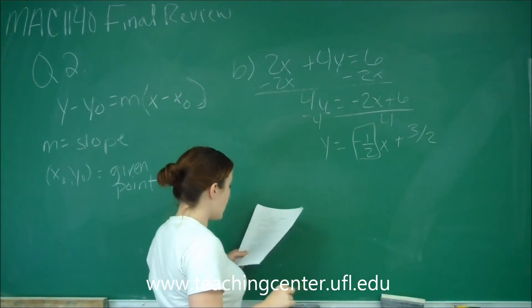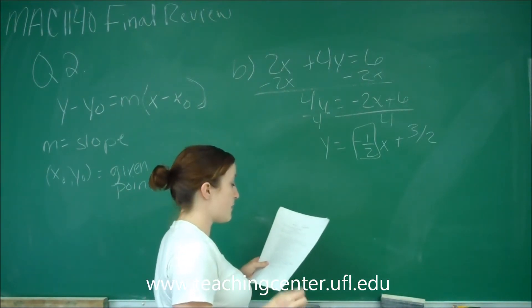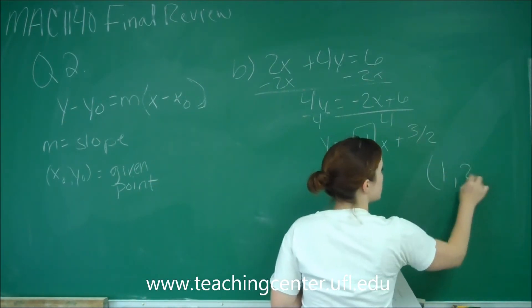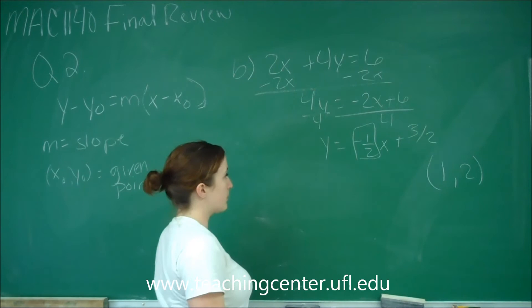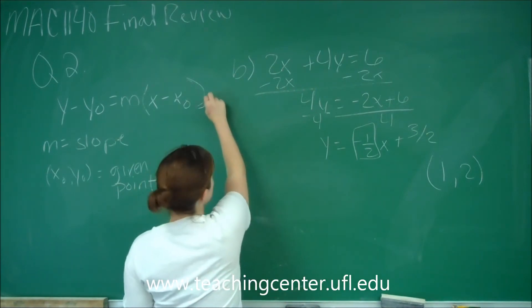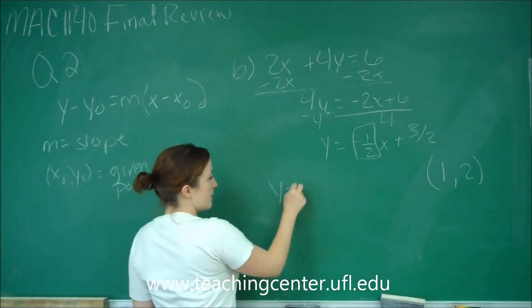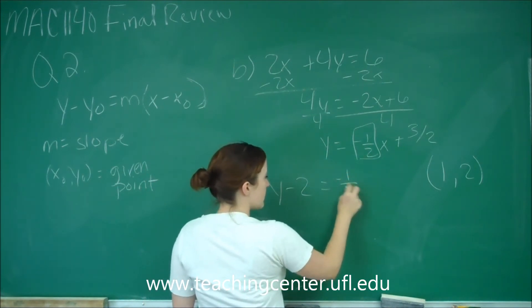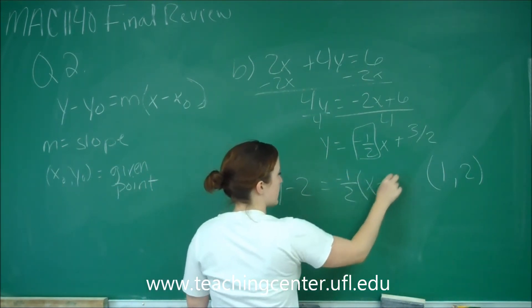If we want to find the equation of a line that is parallel to this and goes through the point 1 comma 2, then we just put it back into point-slope form. So we have y minus 2, because that's our given point, equals our slope m times x minus 1.